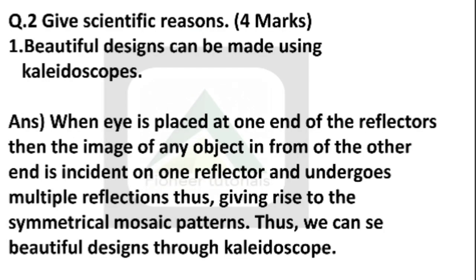Question number 2: Give scientific reasons — beautiful designs can be made using kaleidoscopes. Answer: when the eye is placed at one end of the reflector, the image of an object from the other end is incident on one reflector and undergoes multiple reflections, giving rise to a symmetrical mosaic pattern. Thus, we can see beautiful designs through a kaleidoscope.